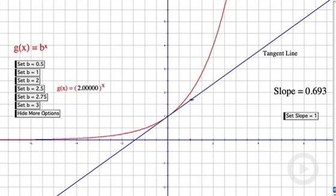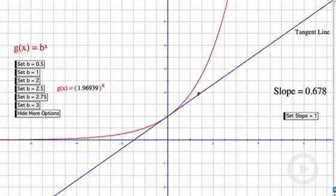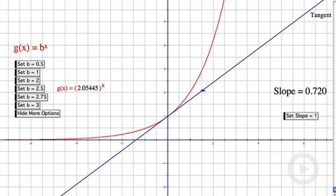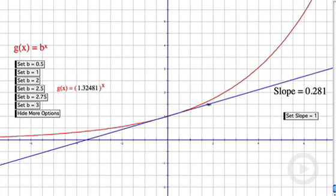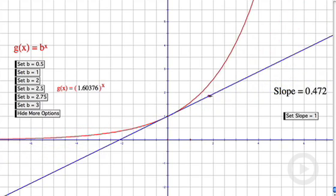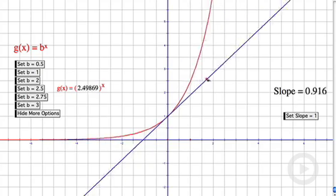Right now the slope is 0.693. Let me move this tangent line around. Notice as I move the tangent line, it's still tangent at the point (0,1). But as I move the tangent line around, the base changes. As I move it so the tangent line is less steep, the base gets smaller. As I move it so the tangent line is more steep, the base gets bigger.